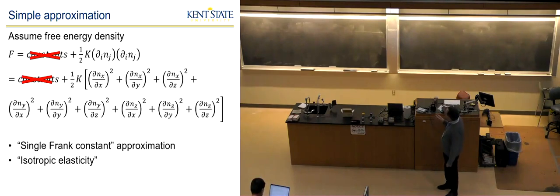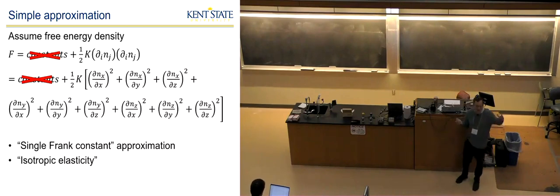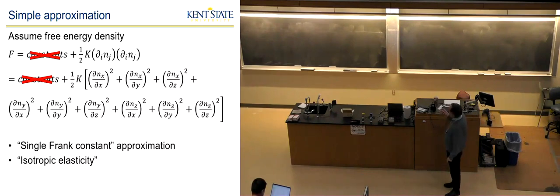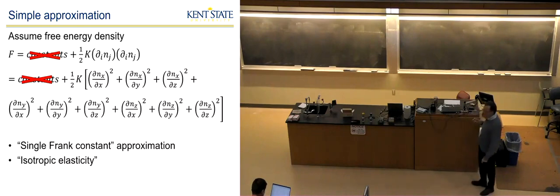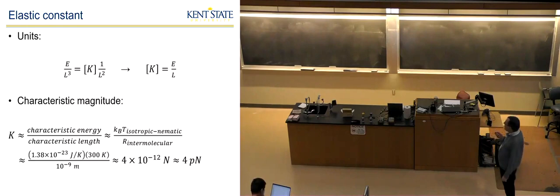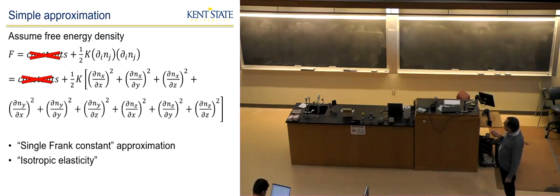I'm now going to cross off all the constants from yesterday that I don't care about anymore, and look at just these quadratic pieces. This is a nice simple approximation for how the free energy might depend on derivatives of the director, and it has an elastic constant K. What can we say about this elastic constant? What are its units?